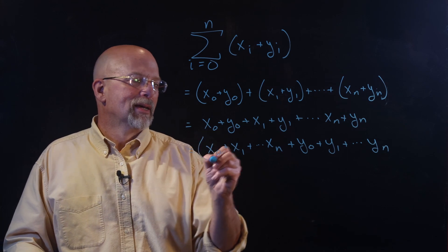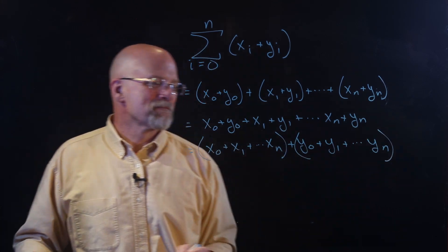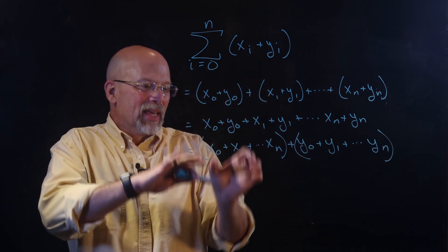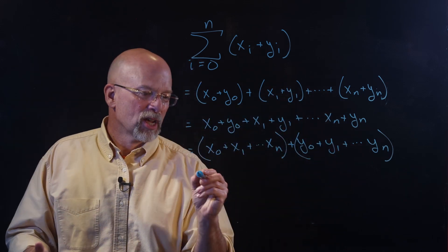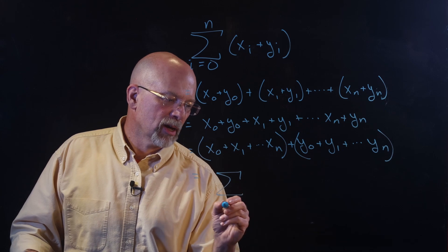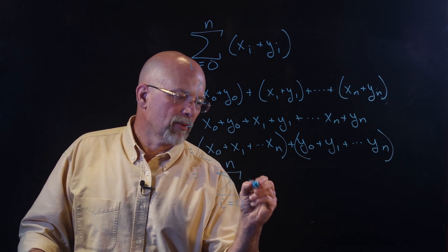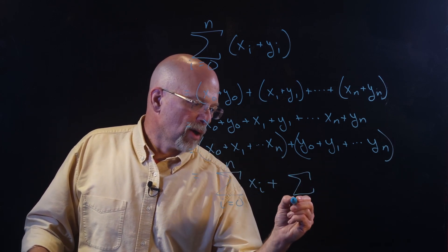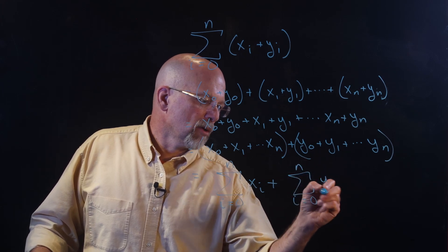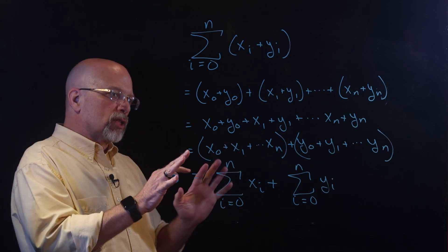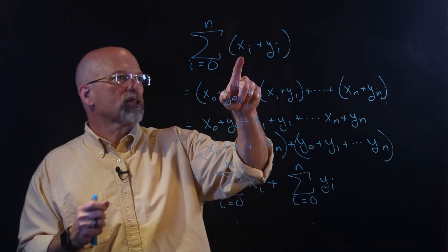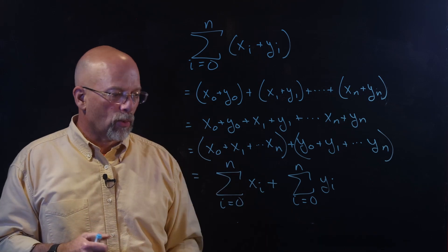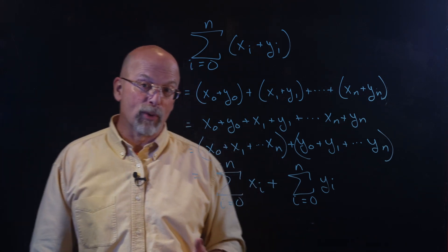The associative law says I can group these, and by grouping them, I've got a summation of x's and a summation of y's. So this actually becomes the summation from i equals zero up to n of x sub i, plus the summation from i equals zero up to n of y sub i. By using the associative and commutative laws, I can separate this summation — pull those two added terms apart — to create two separate summations.